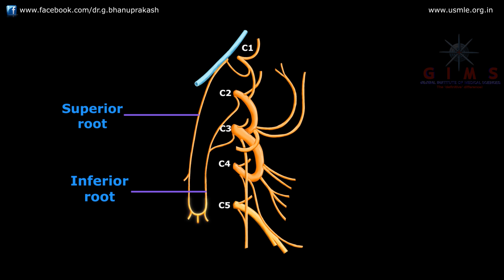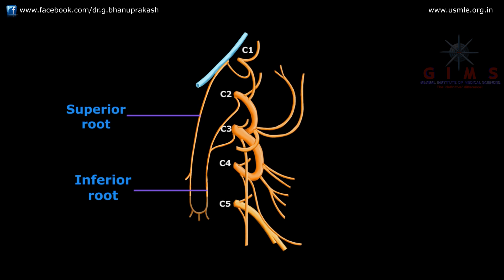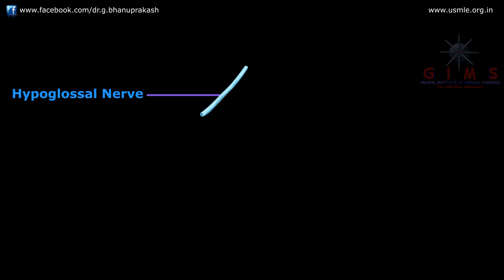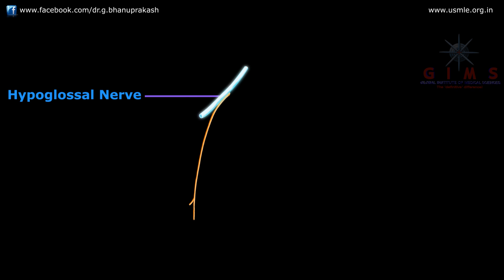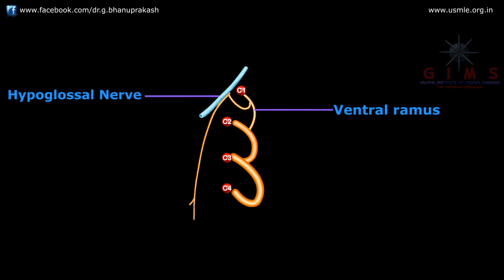The superior root is the continuation of the descending branch of the hypoglossal nerve. This is the hypoglossal nerve which gives off a descending branch. However, the fibers of the descending branch of the hypoglossal nerve are actually derived from the ventral ramus of C1. So, the fibers from the ventral ramus of C1 join the hypoglossal nerve and then come out through it as a descending branch to form the superior root of the ansa cervicalis.